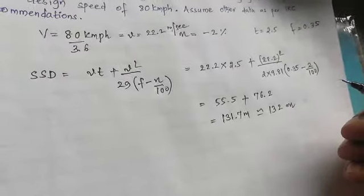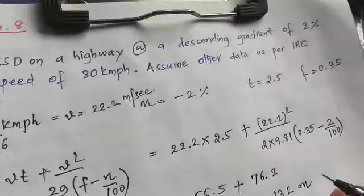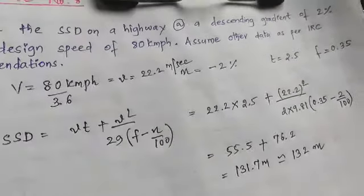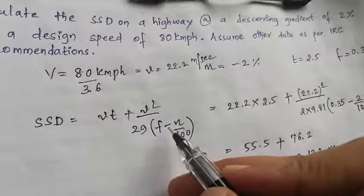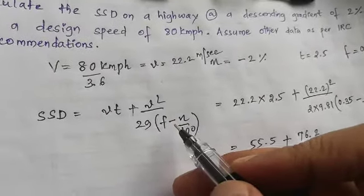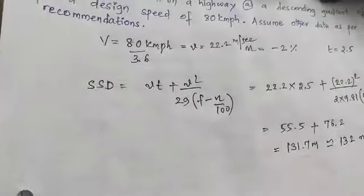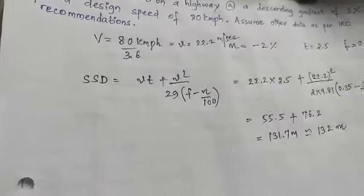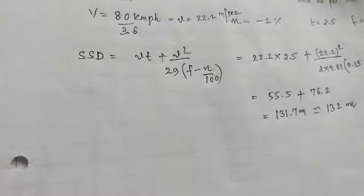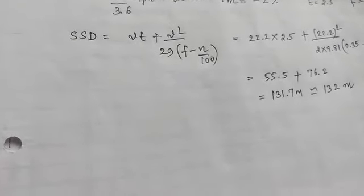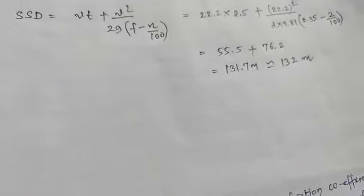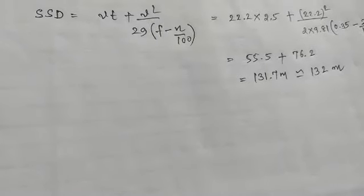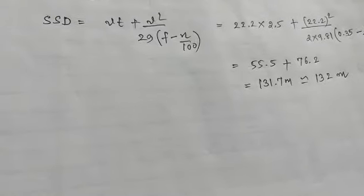Clear? This is when they give you a descending gradient. If they give you a positive ascending gradient, then it's going to be plus. If anyone is comfortable with the other formula, putting the V value in kmph, you can solve from that method also and check the value. You'll again get around 131 meters.